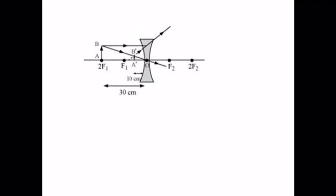The object is placed at 2F1. Then our diagram will be drawn. First line will go parallel to principal axis, it will diverge through focus. Second will pass through optical center. Both lines will cut at a point in between optical center and focus F1.